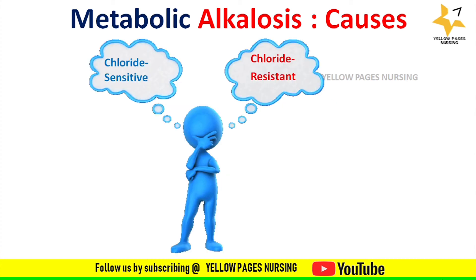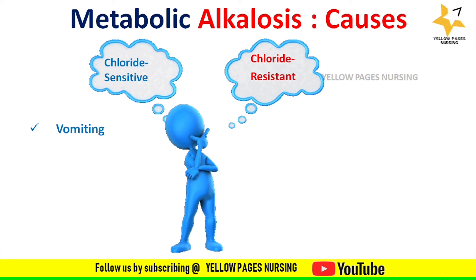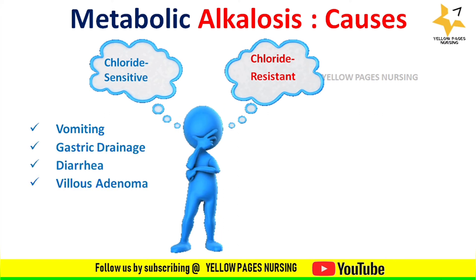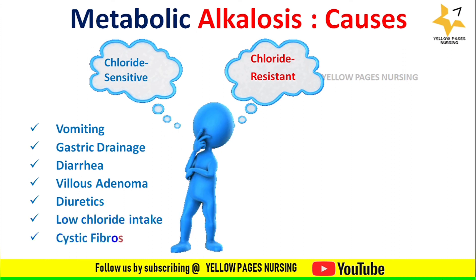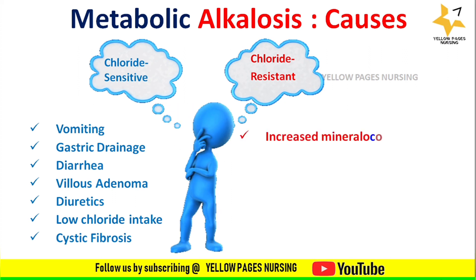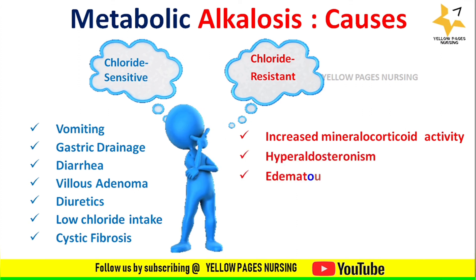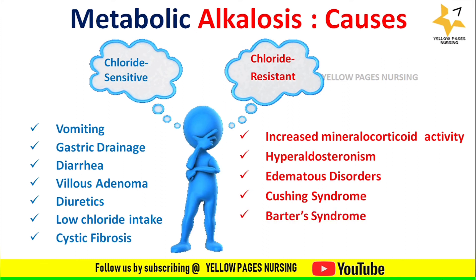The causes of chloride sensitive metabolic alkalosis include vomiting, gastric drainage, diarrhea, villous adenoma, diuretics, low chloride intake, and cystic fibrosis. Chloride resistant metabolic alkalosis may be caused by increased mineralocorticoid activity, hyperaldosteronism, edematous disorders, Cushing's syndrome, Bartter's syndrome, and severe hypokalemia.